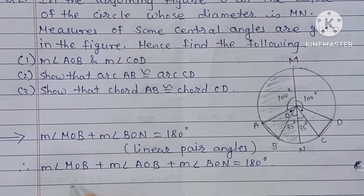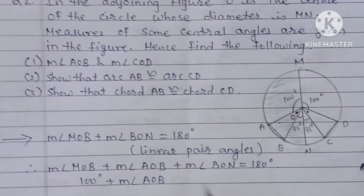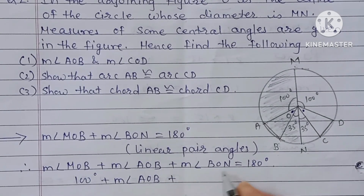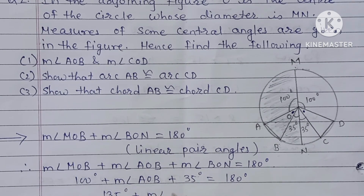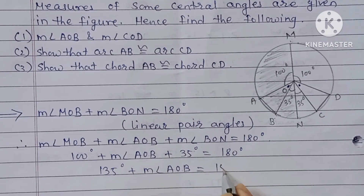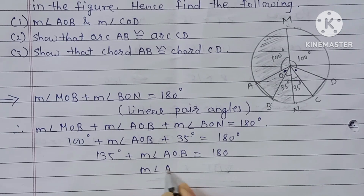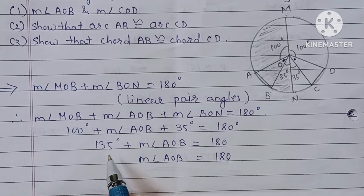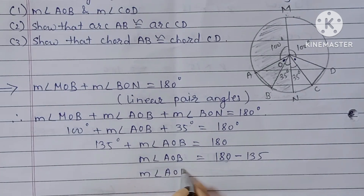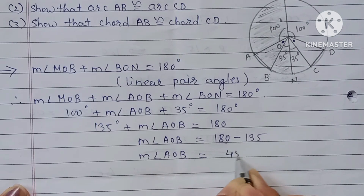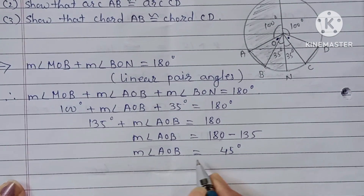Putting in the measurements: angle MOA is 100 degrees, plus angle AOB, plus angle BON which is 35 degrees, equals 180 degrees. So 135 degrees plus angle AOB equals 180 degrees. Therefore angle AOB equals 180 minus 135, which is 45 degrees.